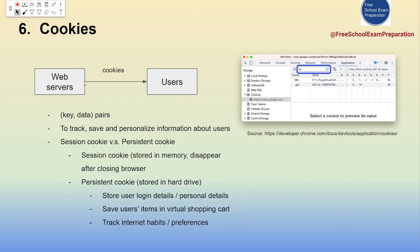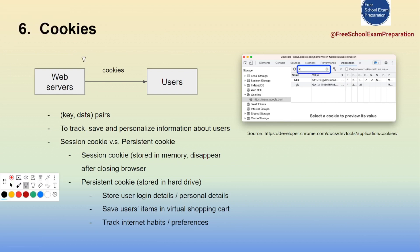Now let's look at cookies. Cookies are small text files sent from the web server to users. Sometimes when you use a web browser, you might receive a message asking whether you accept cookies from the website. A cookie has a name-value pair structure — key-data pairs — and is used to track, save, and personalize user information.